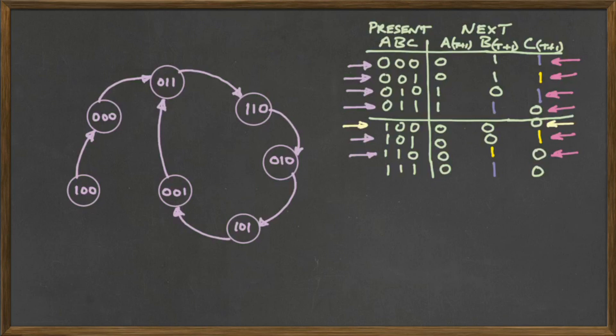And then finally we look at 7 and we see that 7 is going to 2. So we add the 7 and we put an arrow to the 2. So we've completed now all 8 of the states. And our diagram is finished.